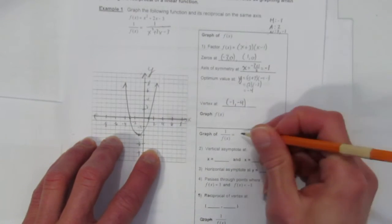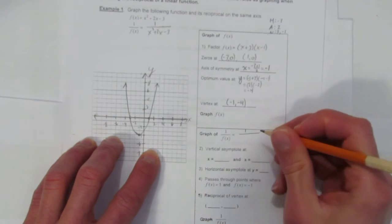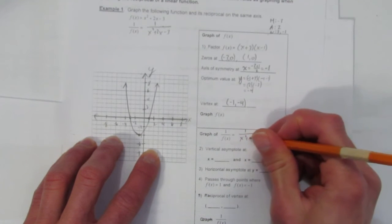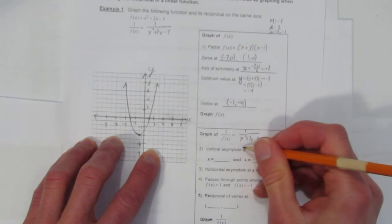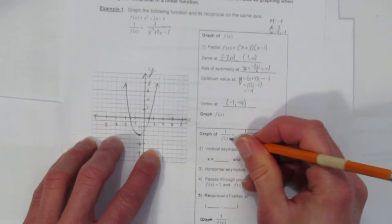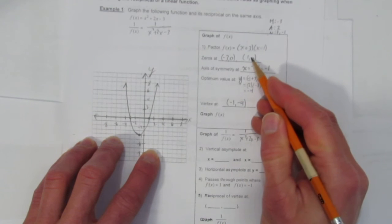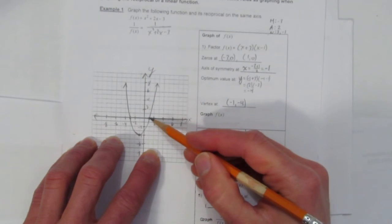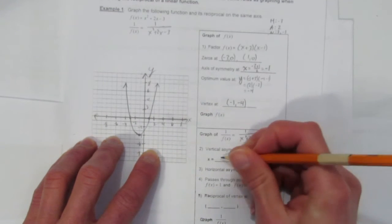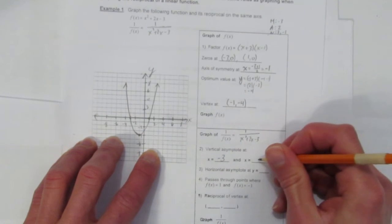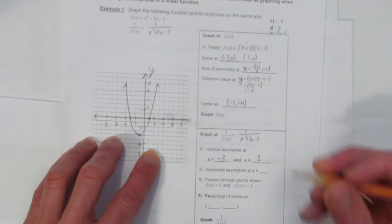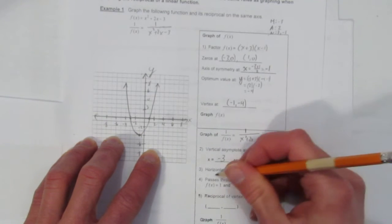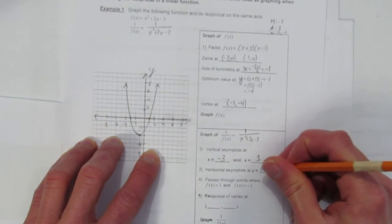Now we'll use it and some other information to graph the reciprocal 1 over that parabola. So the first thing are the vertical asymptotes. The vertical asymptotes of the reciprocal occur at the zeros of the original. So this thing had zeros here and here. Those same locations are where the reciprocal has vertical asymptotes.